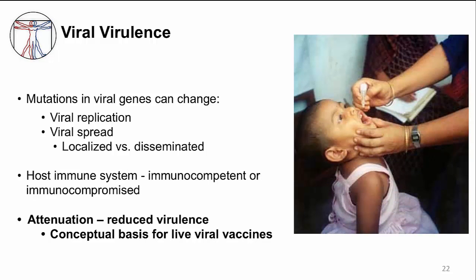Although much focus is on viruses with increased virulence, the concept of reduced virulence is equally important. This is called attenuation, and it is the conceptual basis for many live viral vaccines. This little girl is getting the oral polio vaccine — a live but attenuated virus. It will replicate in her intestine, inducing an immune response, but it won't cause her any disease.